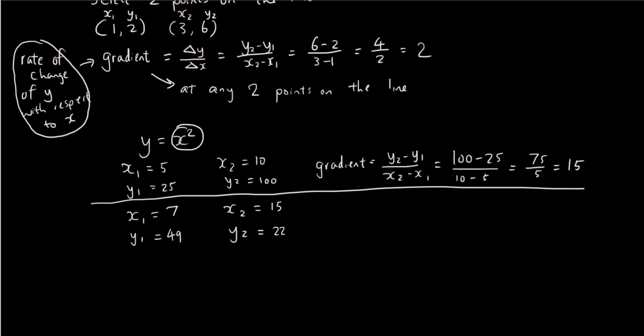The gradient is equal to 225 minus 49 over 15 minus 7. So I'll just use the calculator for this and the answer is 22.